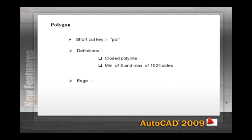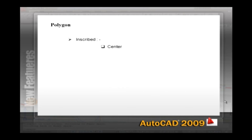Edge: locate an endpoint of the first edge, then pick or enter a value to locate the second endpoint. Inscribed: locate the center of an imaginary circle and then specify its radius — AutoCAD draws the polygon so that the corners of the polygon touch the circumference of the circle. The circle is not actually drawn. Circumscribed: locate the center of an imaginary circle and then specify its radius — AutoCAD draws the polygon so that the sides of the polygon are tangent to the imaginary circle.